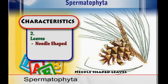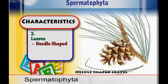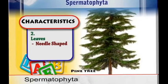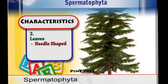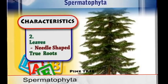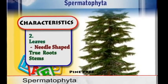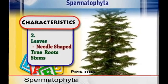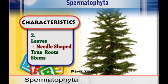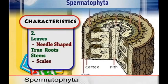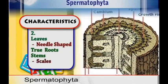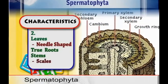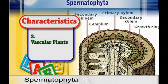Another characteristic of the Gymnosperms is that their leaves are needle-shaped — they have leaves which look just like needles. But they are plants with true roots and true stems, and the stem has scales. They are vascular plants.